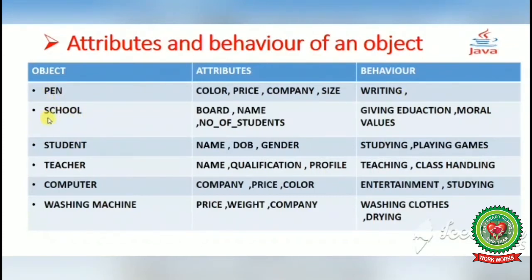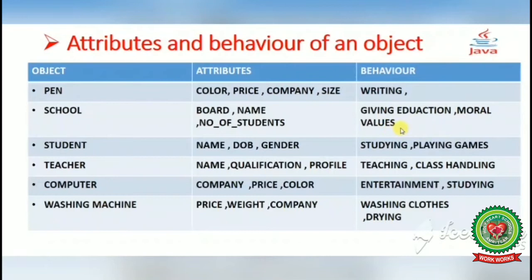The next object is a school. The attributes of a school are: board (ICSE, CBSE), name, and number of students. The behavior of a school is giving education to students and teaching them moral values. You can choose attributes and behaviors according to your requirement.